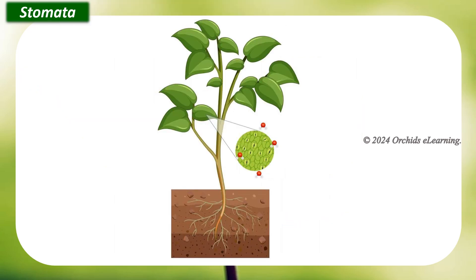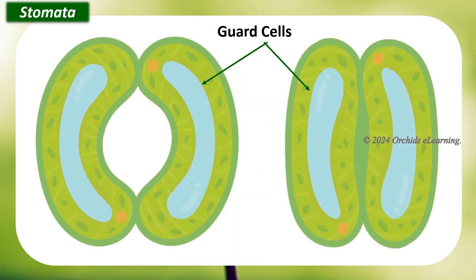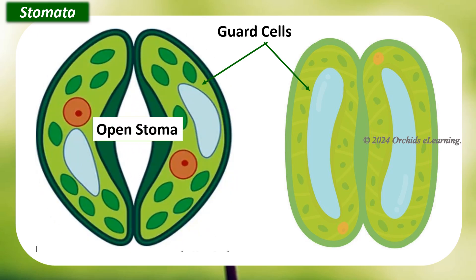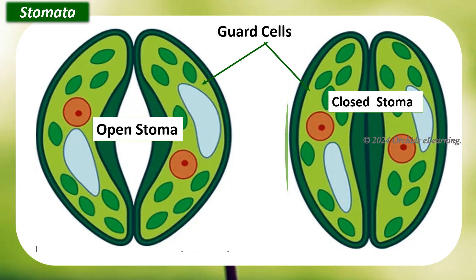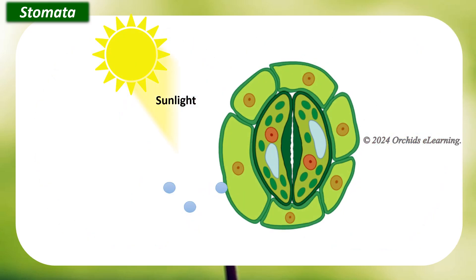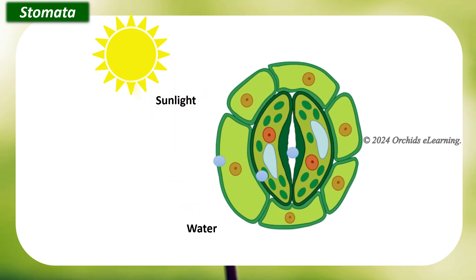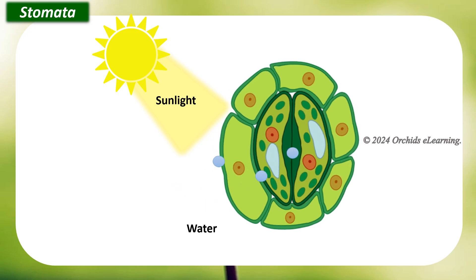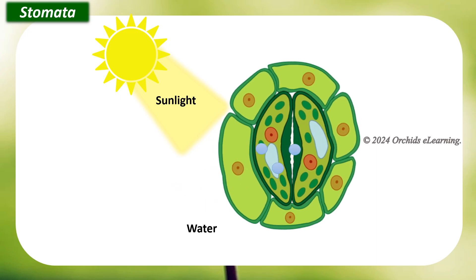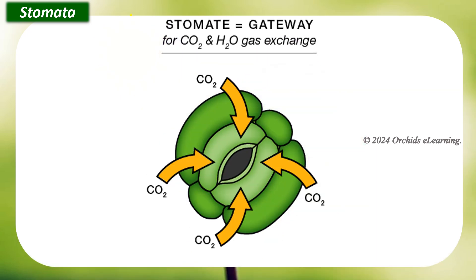Stomata is singularly called stoma. Each stoma is bounded by two half-moon-shaped guard cells. The guard cells regulate the opening and closing of the stoma. When there is enough light and water, the guard cells swell up and curve away from each other, thus opening the stoma, which allows carbon dioxide to enter the cells of the leaf.